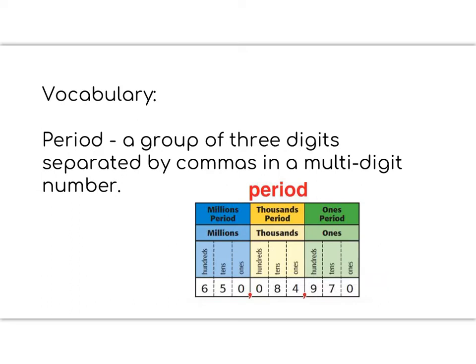Today's lesson has a vocabulary word. The vocabulary word for today is period. A period is a group of three digits that are separated by a comma in a multi-digit number. In the example down below, we're looking at the number 650,084,970. We know how to say that number because we look at each group of three and then we see a comma. That group of three is called a period. So we have the ones period, the thousands period, and the millions period. Every time we see a comma, that starts a new period. Please pause to write the vocabulary word and the definition in your notebook.